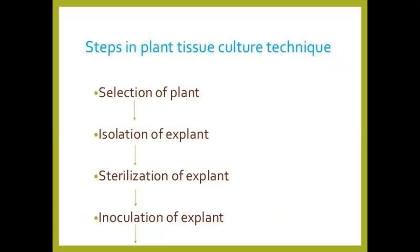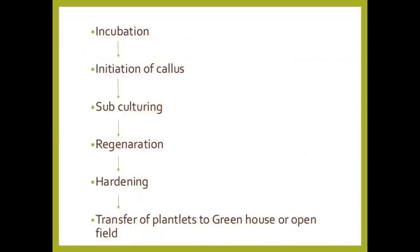The steps followed in the plant tissue culture technique: first, select the plant, then cut the explant — it can be leaves, stem section, or bud section. Whatever is needed, we will isolate the explant. Then we sterilize the explant with the help of sodium hypochlorite and Triton X-100. After the sterilization process, we proceed with inoculation of the explant.